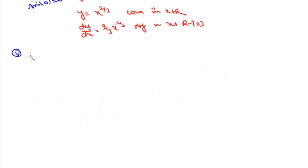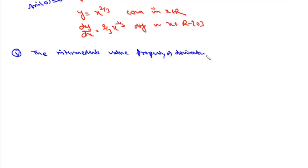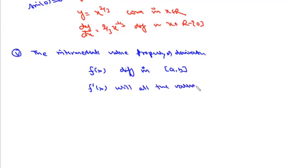The fifth result is the Intermediate Value Property of Derivatives. It states: if f(x) is differentiable on the closed interval [a, b], then f'(x) will take all values between f'(a) and f'(b) in that interval.